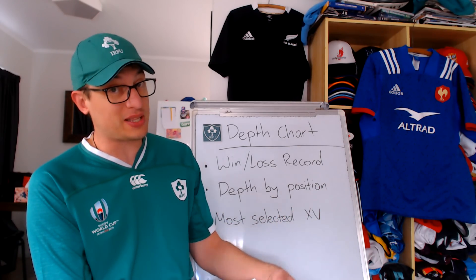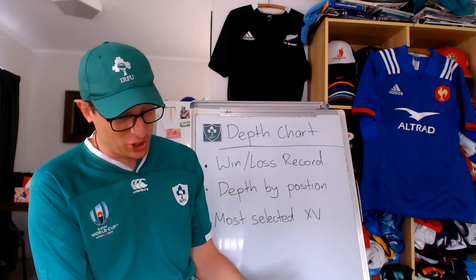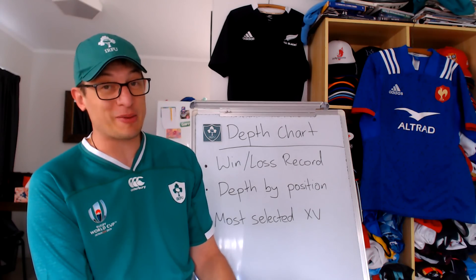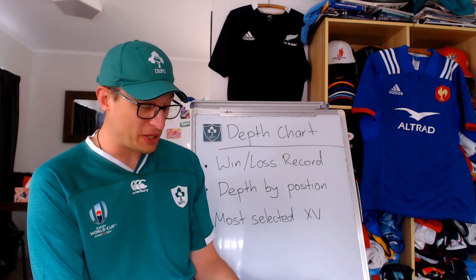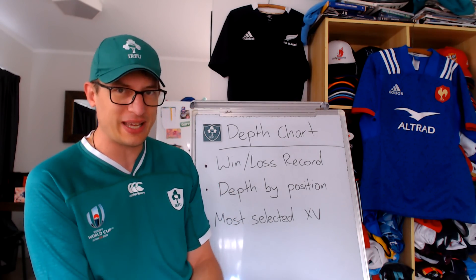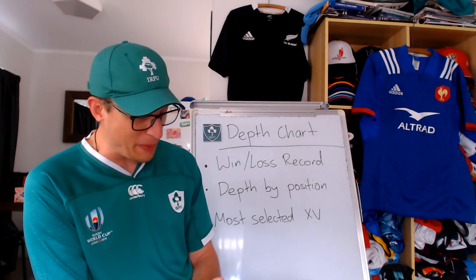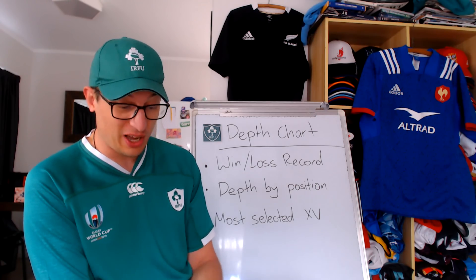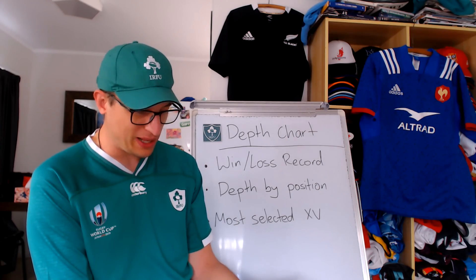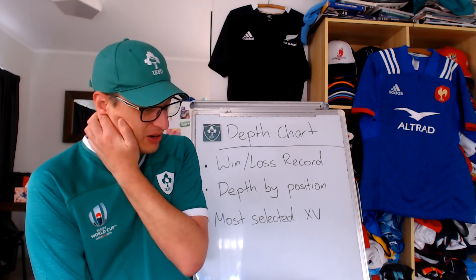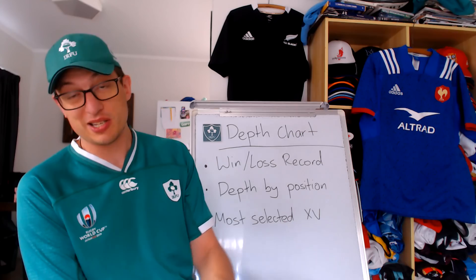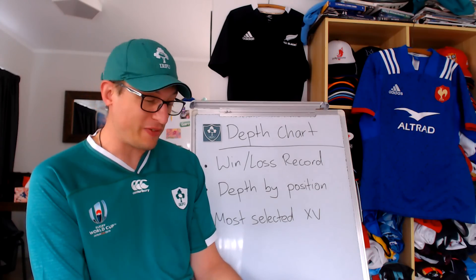We'll start with the win-loss record. Ireland are the number one ranked team in the world. They only lost two games all year - away to France and away to New Zealand. There's no real shame in losing those games. France had a perfect record and not many teams come to New Zealand and get an away series win. They got a big win away at Twickenham and held it at home against South Africa and Australia, even if they were close three-point wins. That's the sign of a really good team - even when not everything's going according to plan, Ireland still managed to find a way to win.